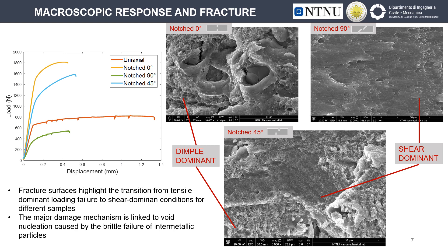The macroscopic load versus displacement response of the alloy for the selected geometries is shown on the left. The analysis of the fractured surfaces, which show a transition from dimple-dominant to shear-dominant, was used to get insights on the damage mechanisms. For the sample with a zero-degree notch, the fractured surface is characterized by normal dimples, developed under triaxiality-led failure. The sample with a 90-degree notch shows shear dimples, typical of shear-dominated loadings. For the 45-degree notch, both shear dimples and normal dimples are present. Looking closely at the fractured surfaces, we can see broken intermetallic particles, recognized as the principal damage mechanism for this alloy.